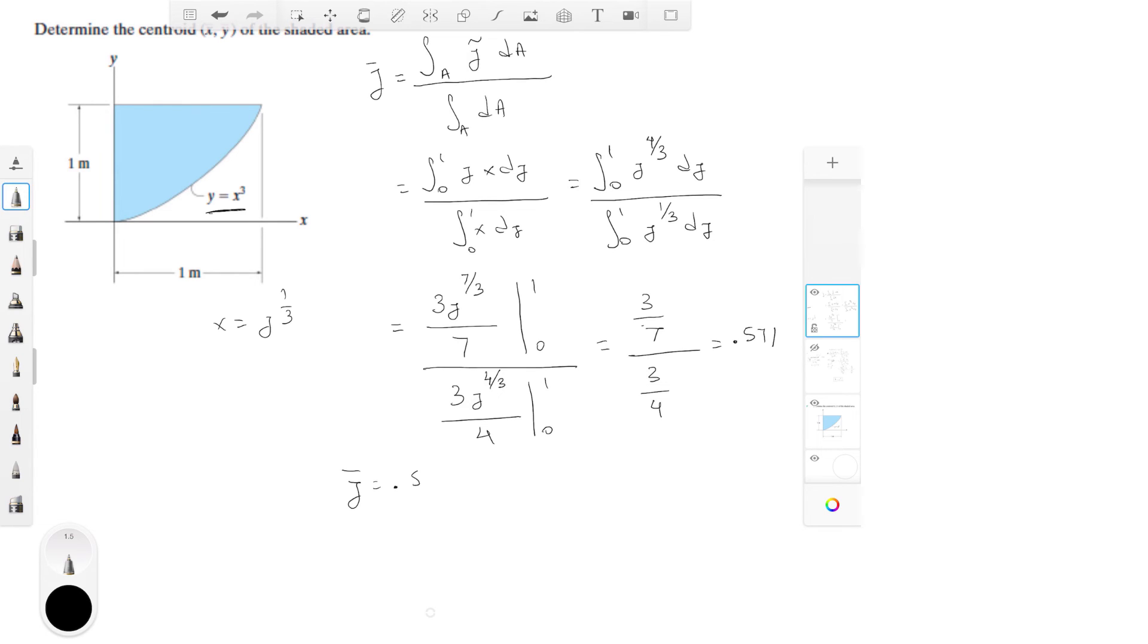Which is equal to 0.571, so ȳ is equal to 0.571 and we found on the previous step that x̄ is equal to 0.4.